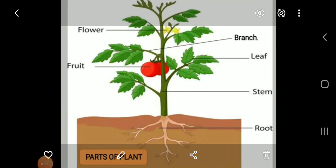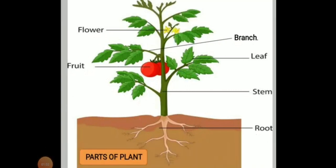You are seeing this picture of a plant. We have already discussed that the part inside the soil is called the root system, and the part of the plant which is above the soil is called the shoot system. In the root system we have seen the roots, and in the shoot system we have seen stem, leaves, branches, flowers, and fruits.